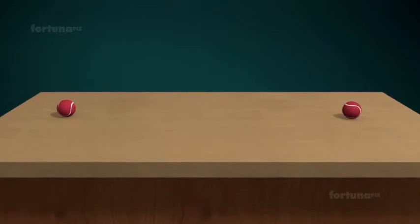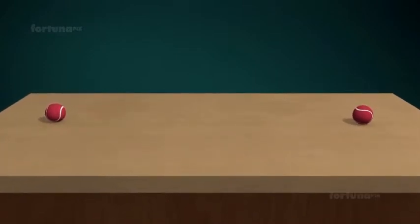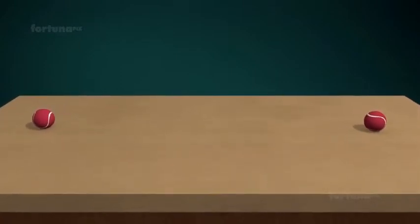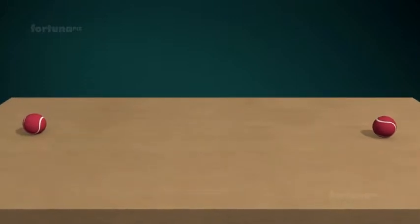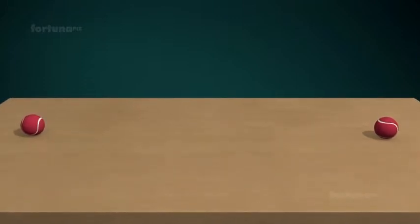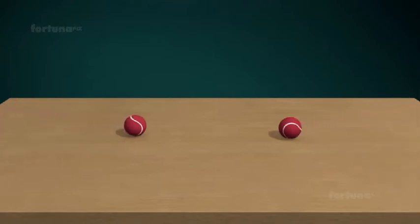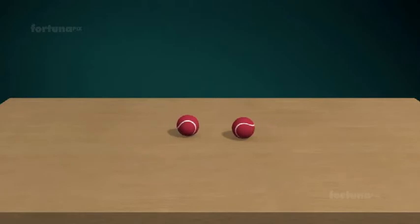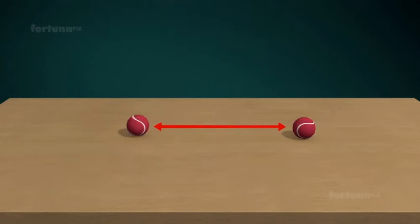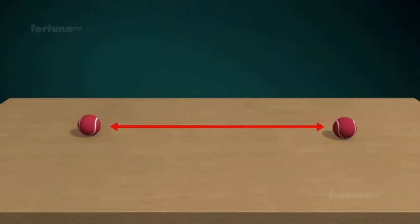Let's look at this law in action so that we can better understand it. Let's consider two tennis balls sitting on the table — one ball on one end of the table and the other one at the other end. If you and your friend use the exact same amount of force and push both balls towards one another, they will roll across the table, striking one another. After they collide, the balls will bounce off one another and move in opposite directions with the same speed.